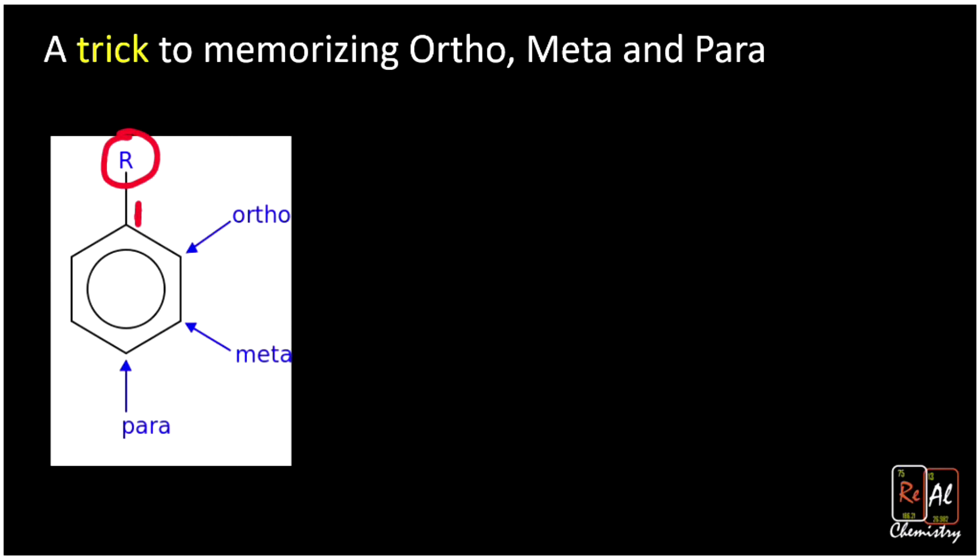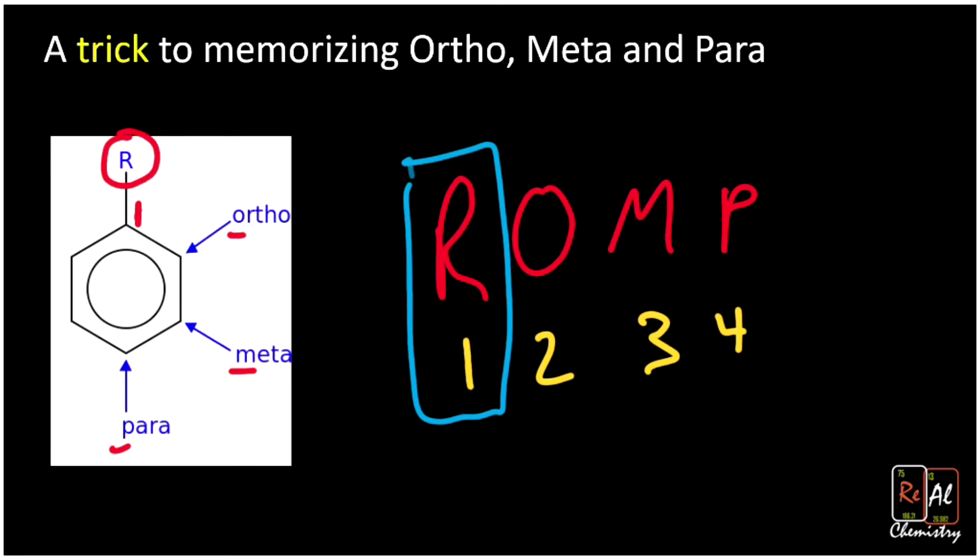If we think about R, and then ortho, meta, and para, we get the word ROMP. Then all we have to do is number below it: 1, 2, 3, 4. That means our R group is always going to be at the first carbon, as we know.